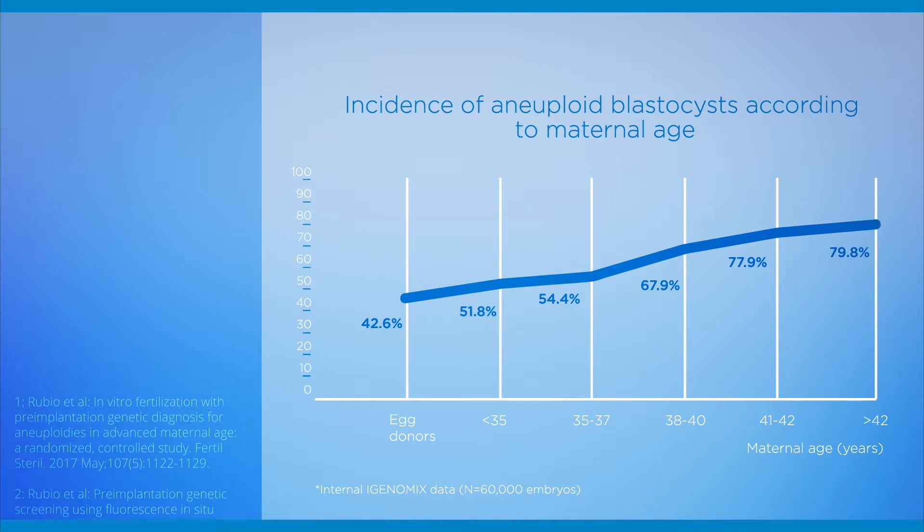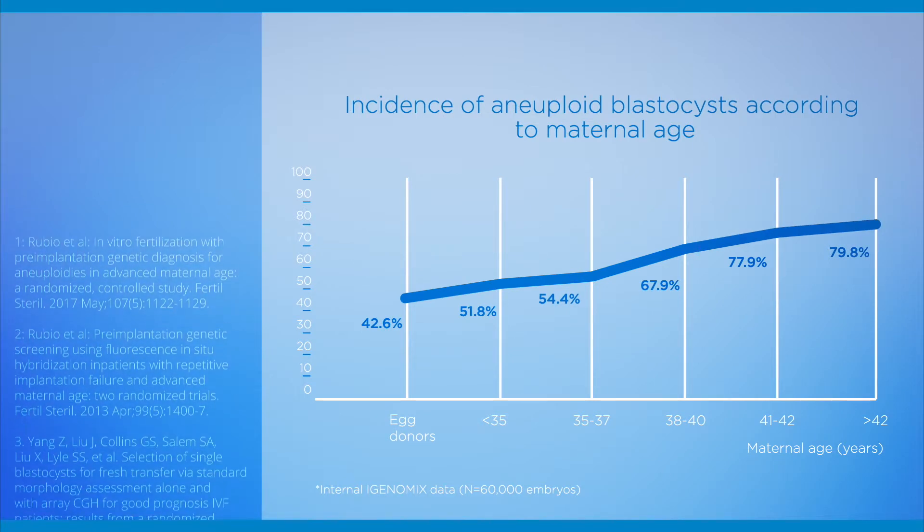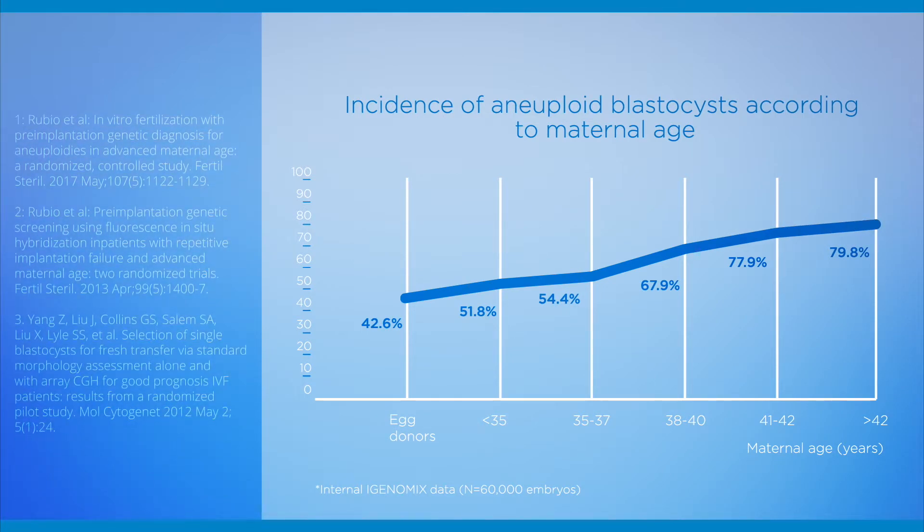According to research from iGenomics and published clinical data, a large number of embryos created during an IVF cycle are chromosomally abnormal and will never lead to a normal pregnancy and live birth.